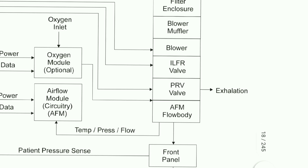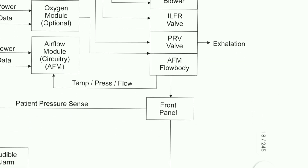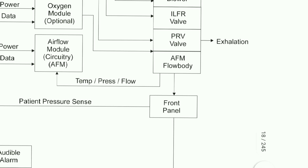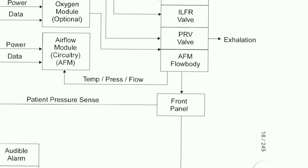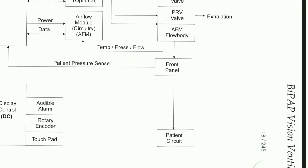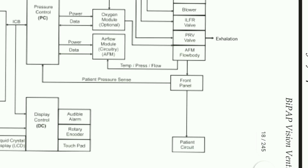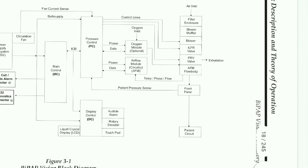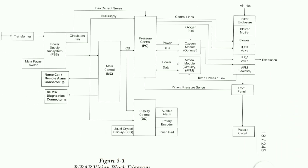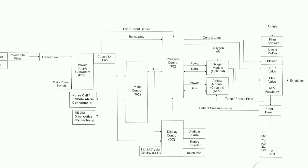Here comes the front panel — there is a patient pressure sense which will sense the pressure coming from the patient side and the patient circuitry. There are two sensors for sensing feedback from the patient. The pneumatic signal is converted into an electrical signal and given to the pressure control, then it goes to the main controller. This was the overall block diagram of the Bypass Vision.